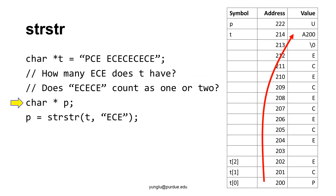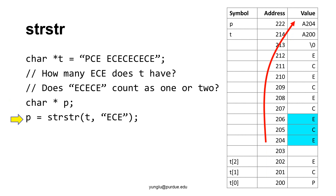Let's fully understand how strstr works. Consider this example. We create a string called t. The string has ECE space ECECECECE. How many ECE does t have? One important question is whether ECECE should count as one ECE or two ECE. We will explain how to distinguish these two cases. First, let's see the stack memory. t is the address of the first element of the array. Suppose the array starts at address 200. t's value is address 200. p is a pointer and it has not been initialized, so its value is unknown. strstr will find the first occurrence of ECE in t, which occurs at addresses 204 to 206. Thus, p will store the address 204.